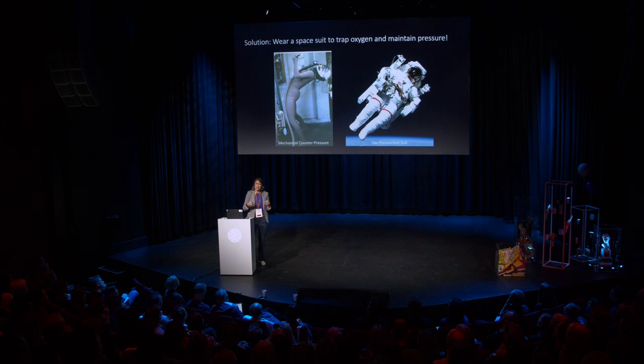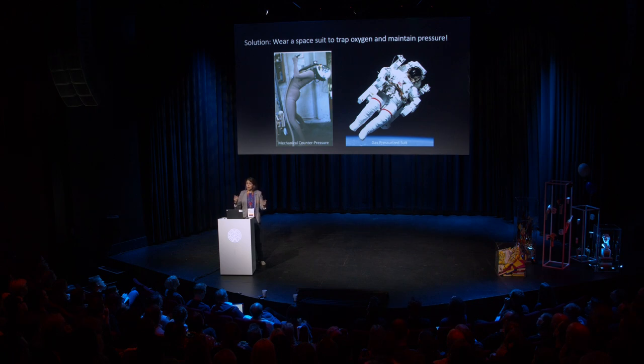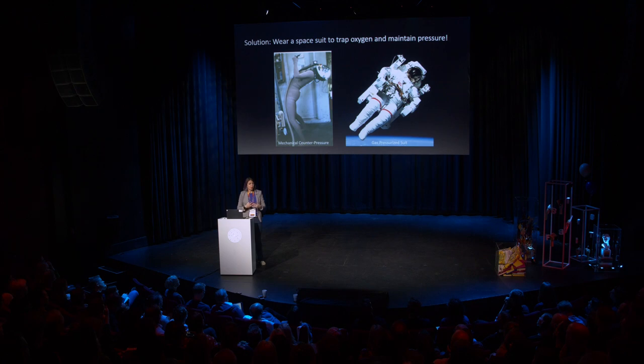With our spacesuit, it's kind of like a big balloon. Inside that layer, you can either provide pressure via mechanical counter pressure — kind of like putting on a very tight pair of Spanx or a really wet wetsuit compressing your skin directly — or you can have a more traditional approach, which we use on the space station, which is a gas-filled balloon. This keeps your body pressure so everything is in balance.